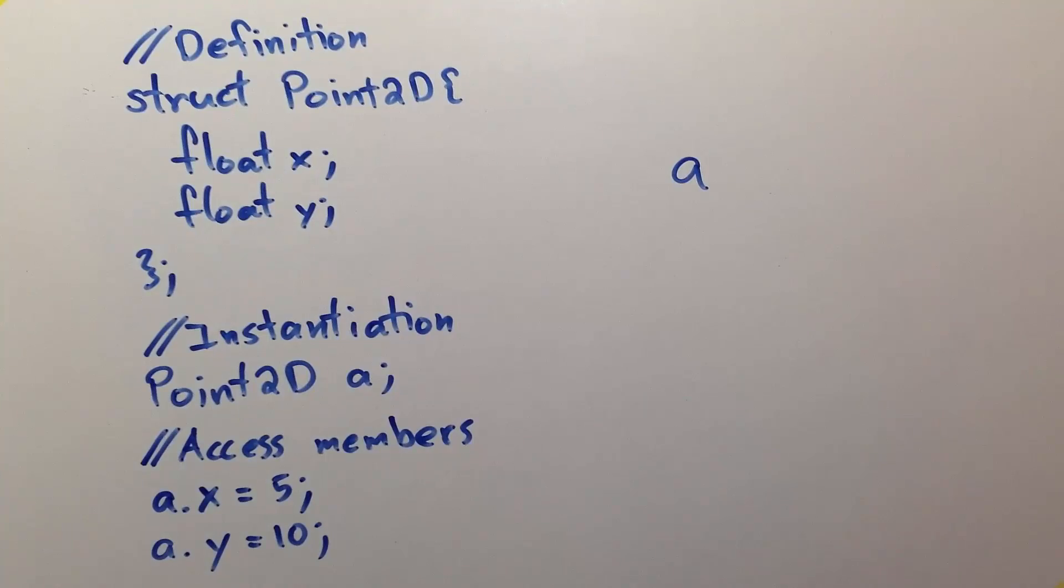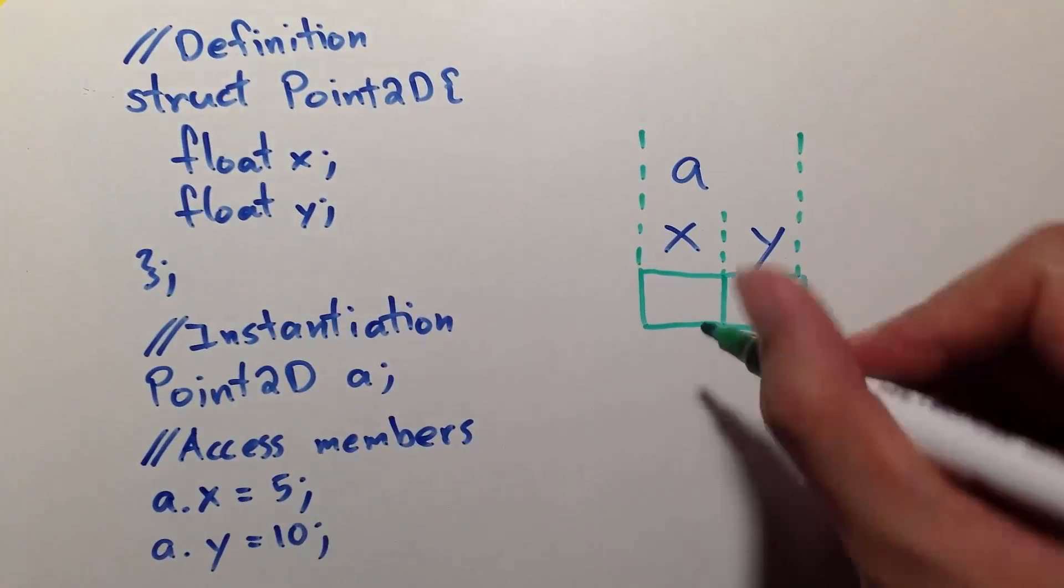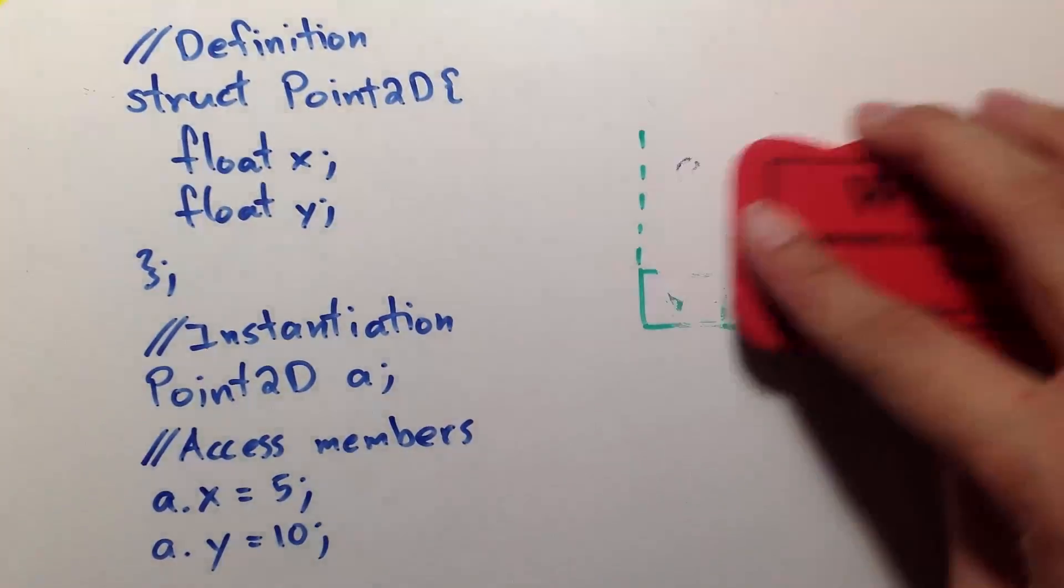Now in memory, it looks like this. a is the structure containing two floats, x and y. In the statement a.x is equal to 5, we put 5 here. In the next statement, puts 10 here.